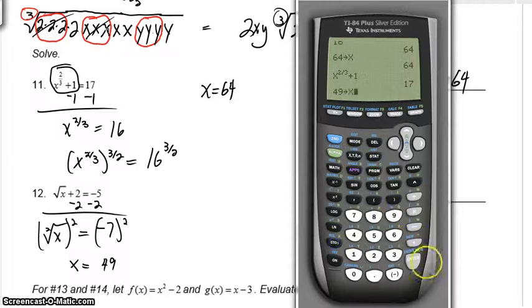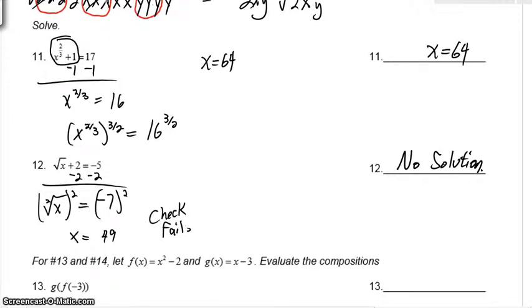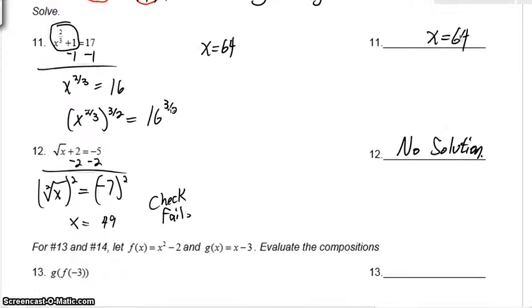But again, for these problems, you should do a check. I'm going to store 49 in for x. And let's check the left side. I'm going to go 2nd square root of x. Move that over, hit the right arrow, hit plus 2. Now if we're right, we should get negative 5. We don't. We get 9. So the check fails. And when the check fails, you're going to say there's no solution. Please be very, very careful. I think a lot of times kids just want to say, oh, this problem will be a no solution. In all truth, sometimes it works out.